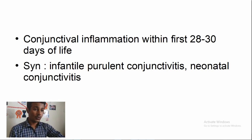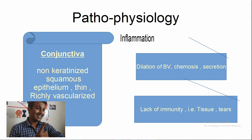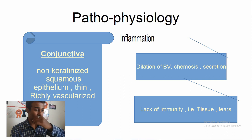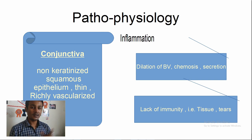Pathophysiology: the conjunctiva is normally a non-keratinized squamous epithelium — thin and richly vascularized. When inflammation happens, there's going to be dilation of blood vessels, chemosis, and secretion. This occurs because of lack of immunity — either tissue immunity has been decreased or local immunity like tears has been decreased. Remember, it's a conjunctivitis, not a special condition, but it can lead to complications like corneal perforation.